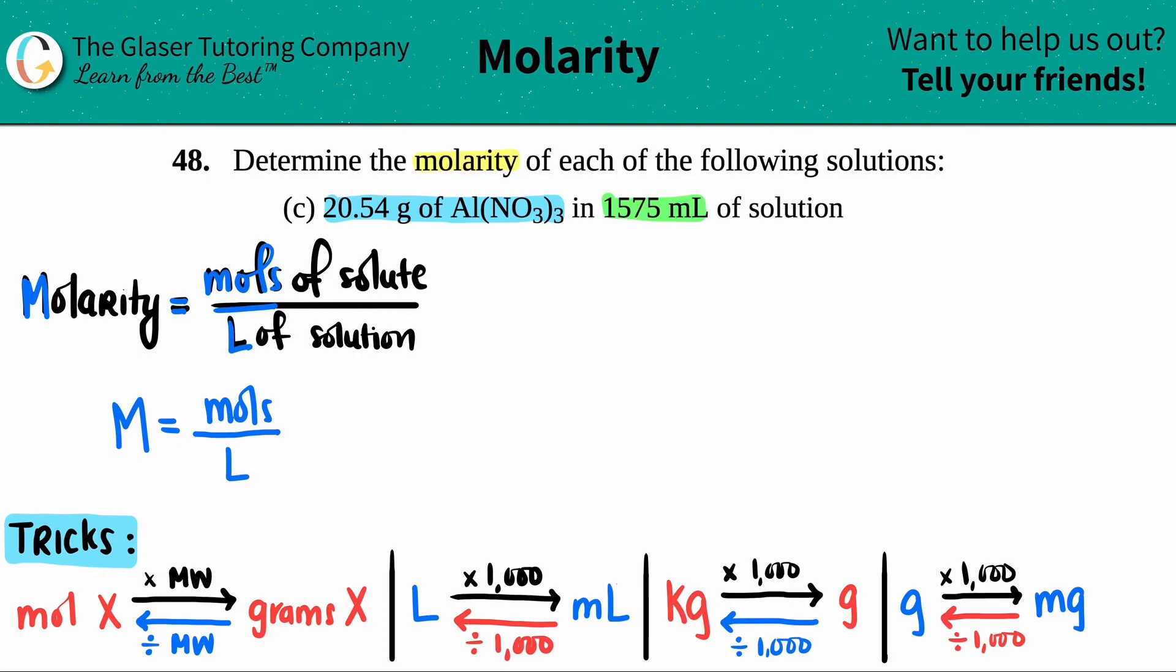Now let's see if we're going to solve for molarity. That means that I should know the moles of my solute, and this is just a quantity number, and I should know my liters. Hmm, they didn't give me both of these. They gave me grams and they gave me milliliters.